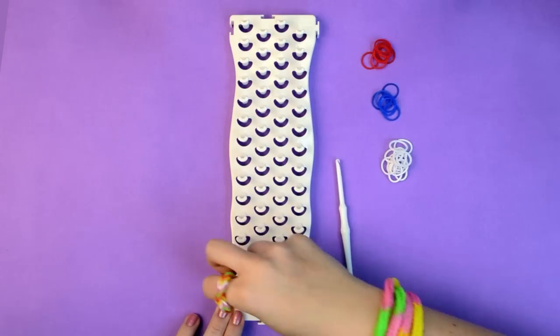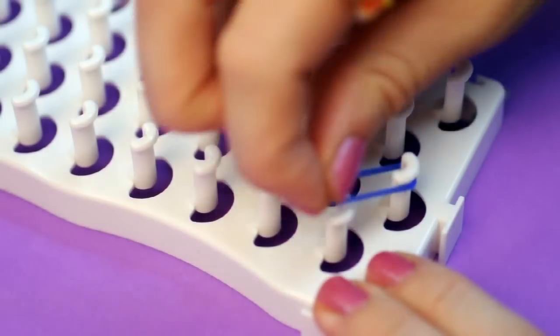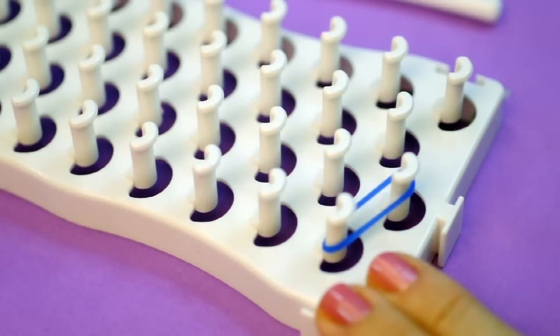Begin by placing one band at the base of the loom. Start at the lowest pin and place the band from left to right, hooking it up over the next pin diagonally.